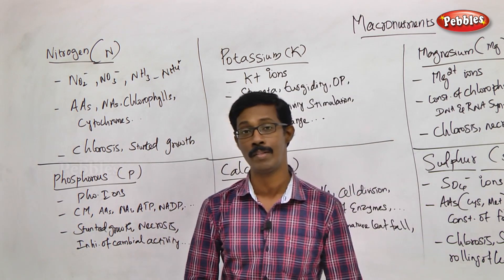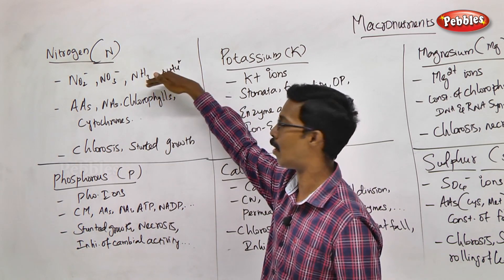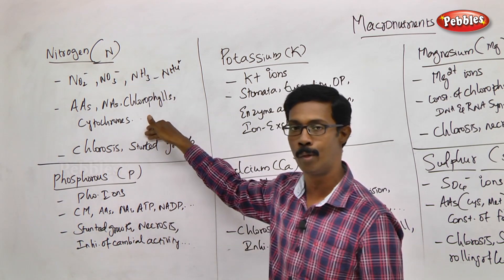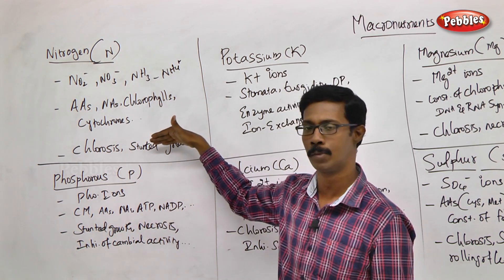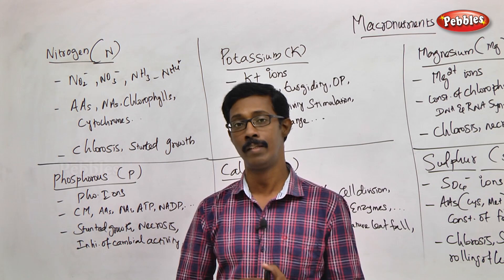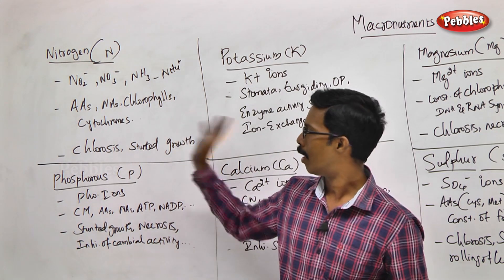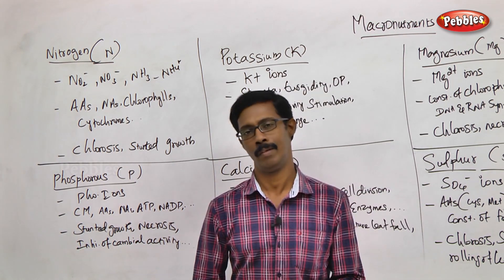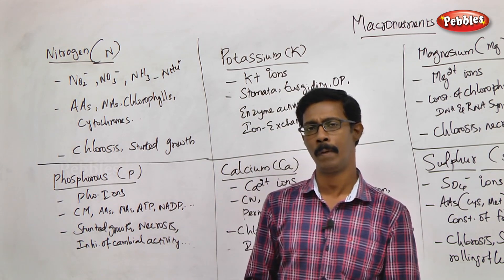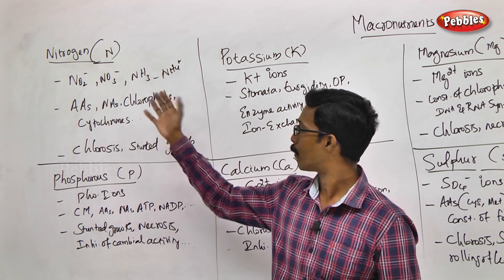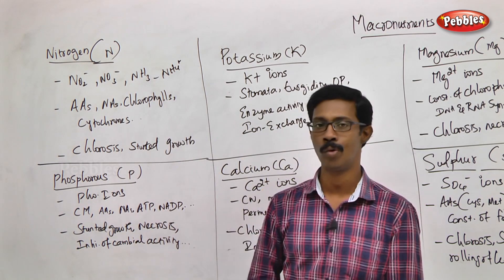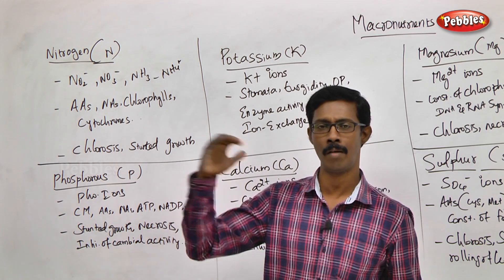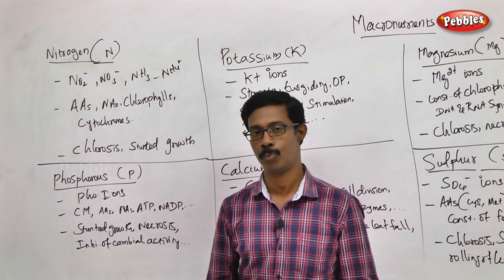So if nitrogen is deficient, there will be a significant effect. Suppose nitrogen is absent from the plant — the visible symptoms include impaired protein synthesis, DNA replication, RNA synthesis, chlorophyll production, cytochrome formation, and ATP production. This leads to what is called stunted growth.